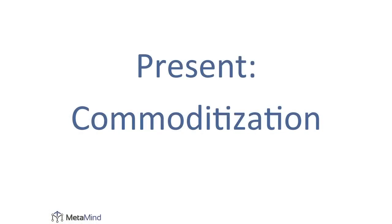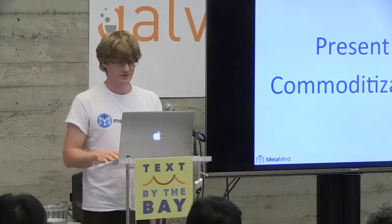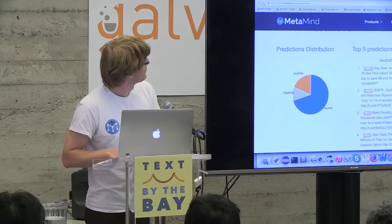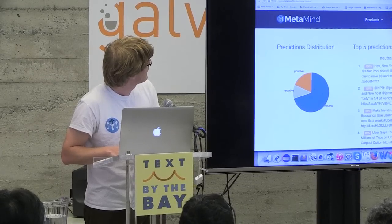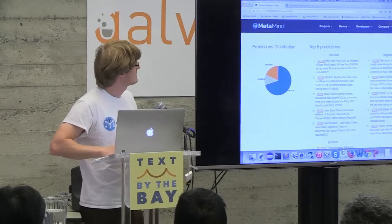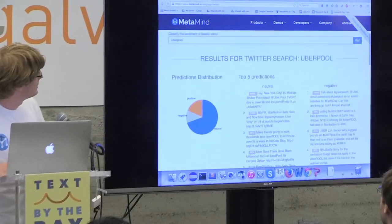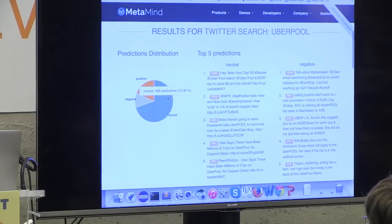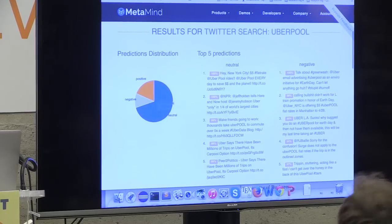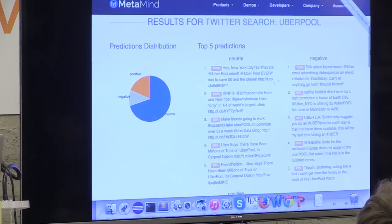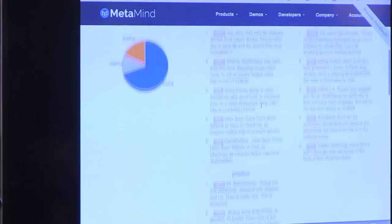Right now there's a lot of commoditization where certain tools for simple tasks work incredibly well out of the box. Here's one from my company MetaMind where we allow you to classify tweets and any other kind of text. I searched for 'uberpool' just before the talk and it gives you how many tweets mentioning uberpool over the last couple of days were neutral, positive, or negative — the simple sentiment analysis case — and in many cases it's quite accurate.